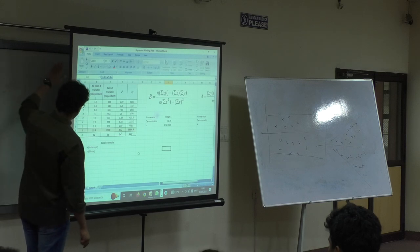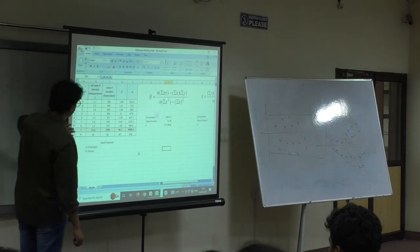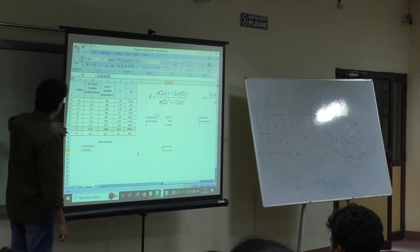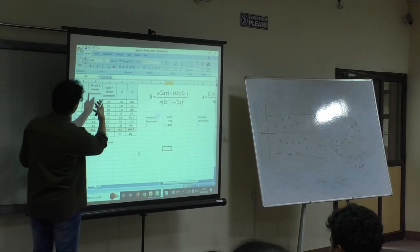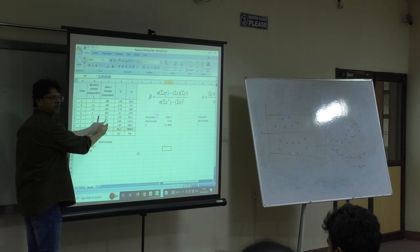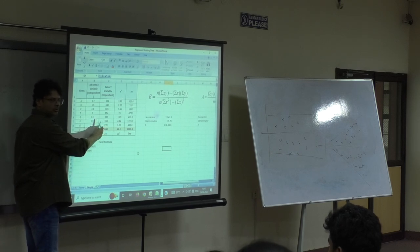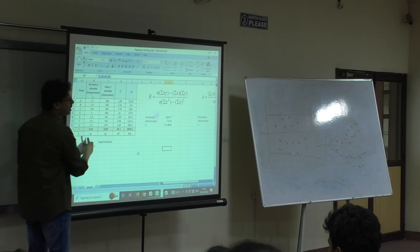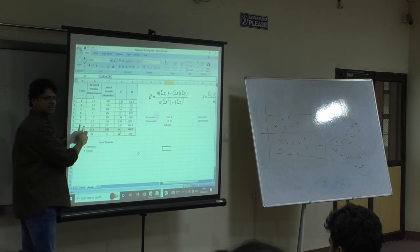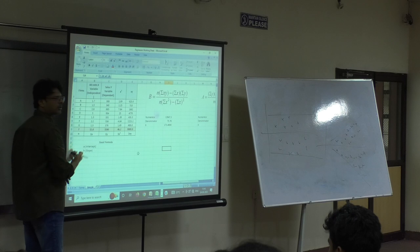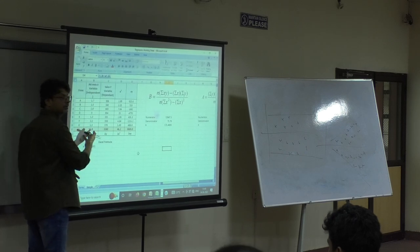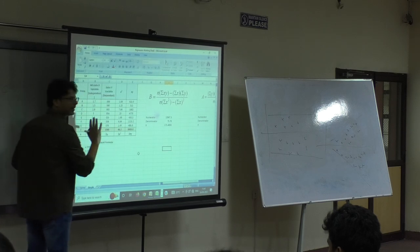So I've taken 8 firms here, where I'm showing advertising costs against the sales that is generated. I'm trying to find out the slope, that is the predictive value. Based on my advertising costs, how much sales will happen. Sales is unknown, this is within the firm's control. So this will be my independent variable.